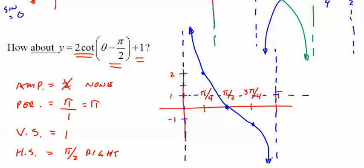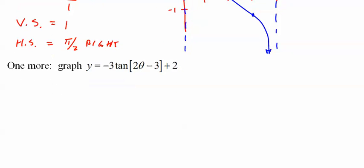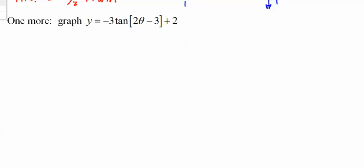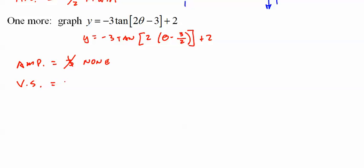One more for tangent. Change the period on you, so watch out. Rewrite this: negative 3 tangent of 2(θ - 3/2) + 2. Amplitude: again, 3 but it's really none. Watch out for the negative, it's going to flip it upside down. Vertical shift equals 2. Period equals 2π/2 equals π. Horizontal shift: I'm going to throw a π in there, I'm going to change the problem a little bit. Put a π in there just in front of it. This is going to be a mess.